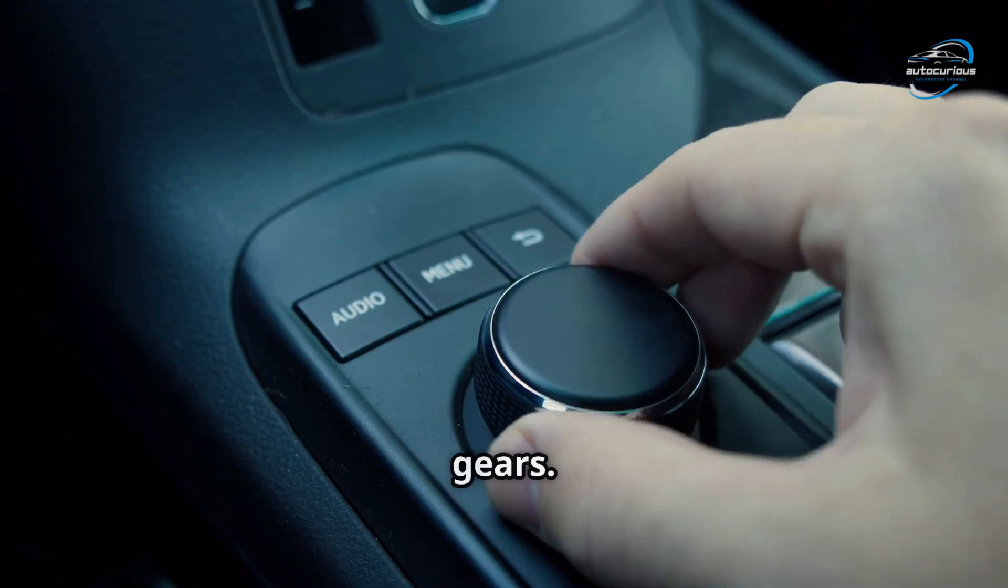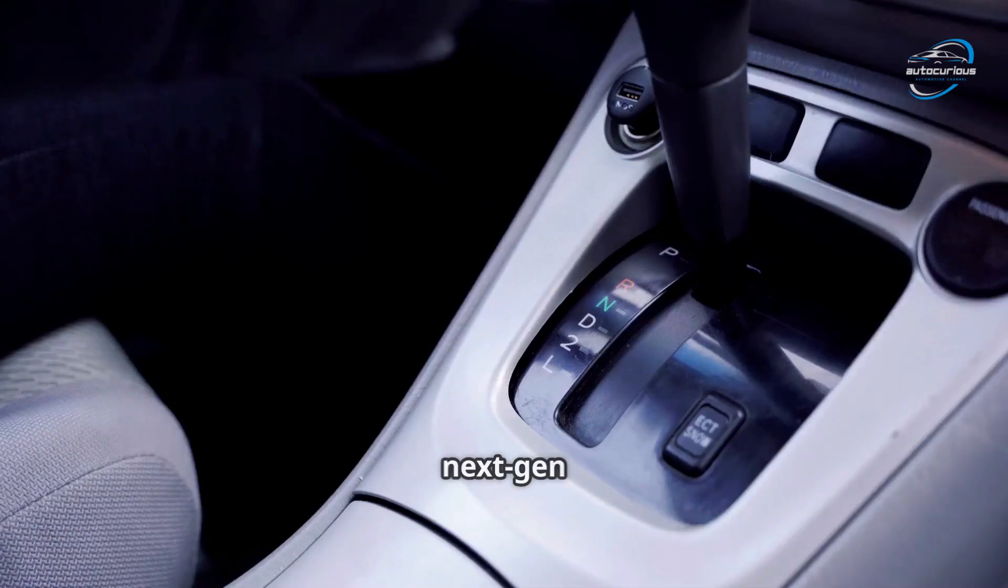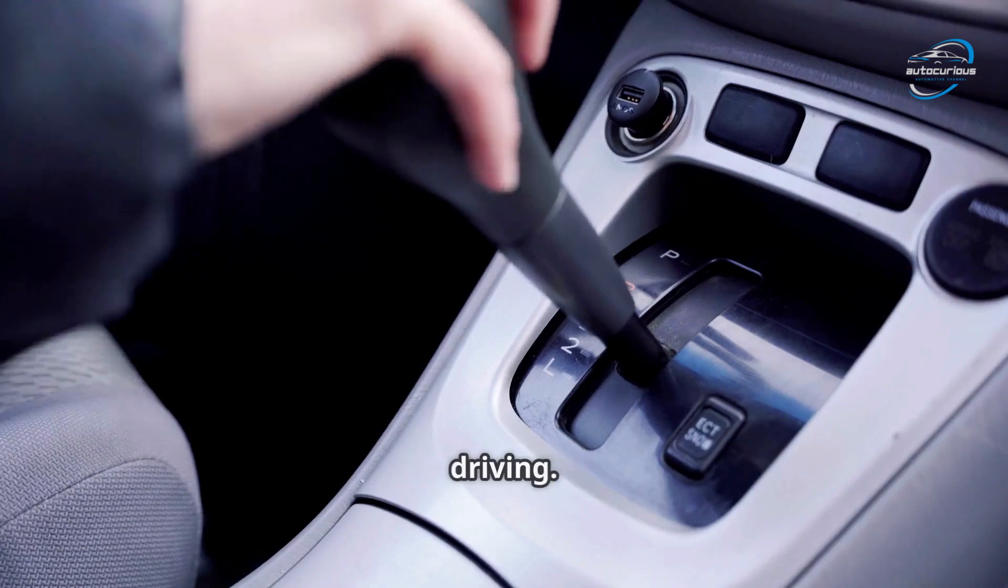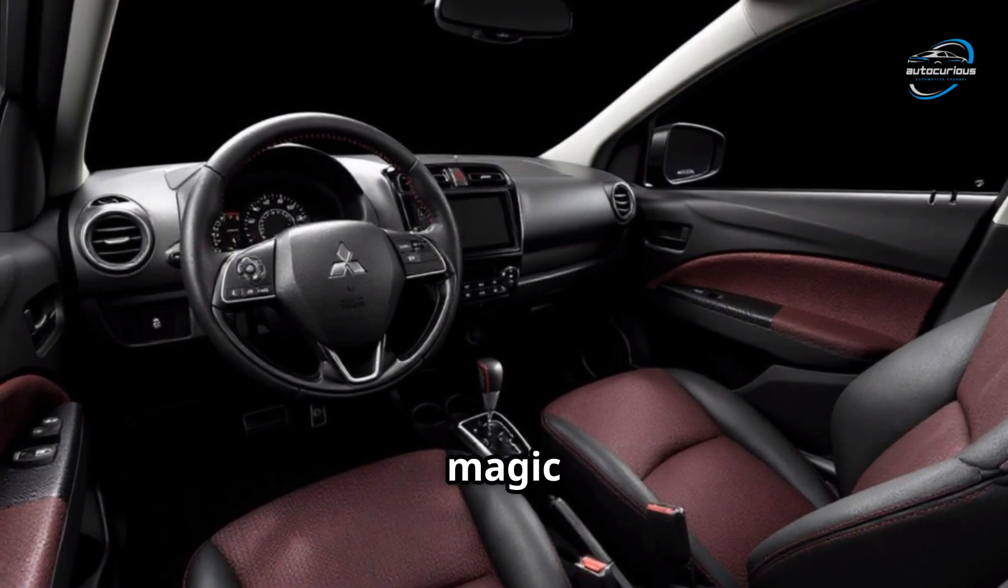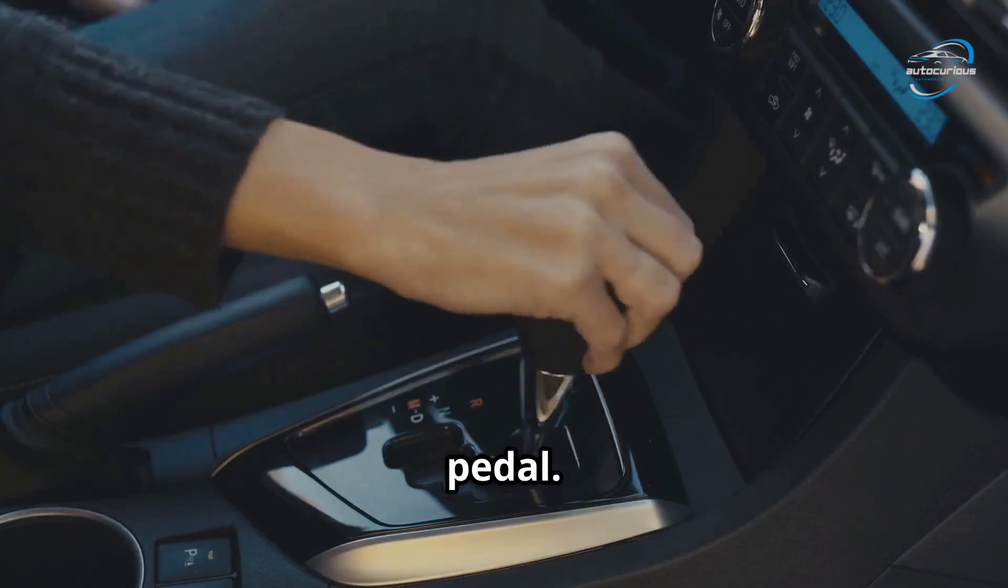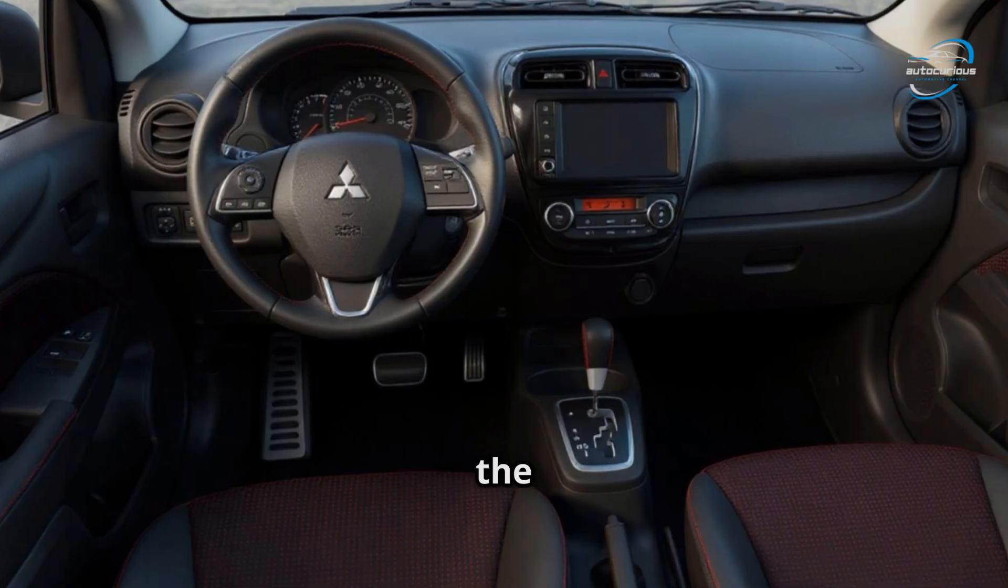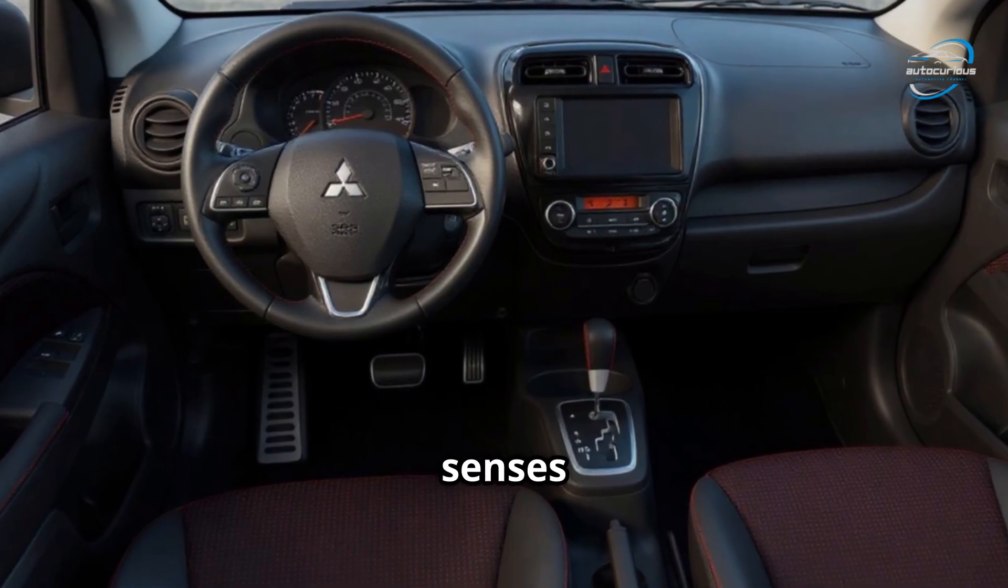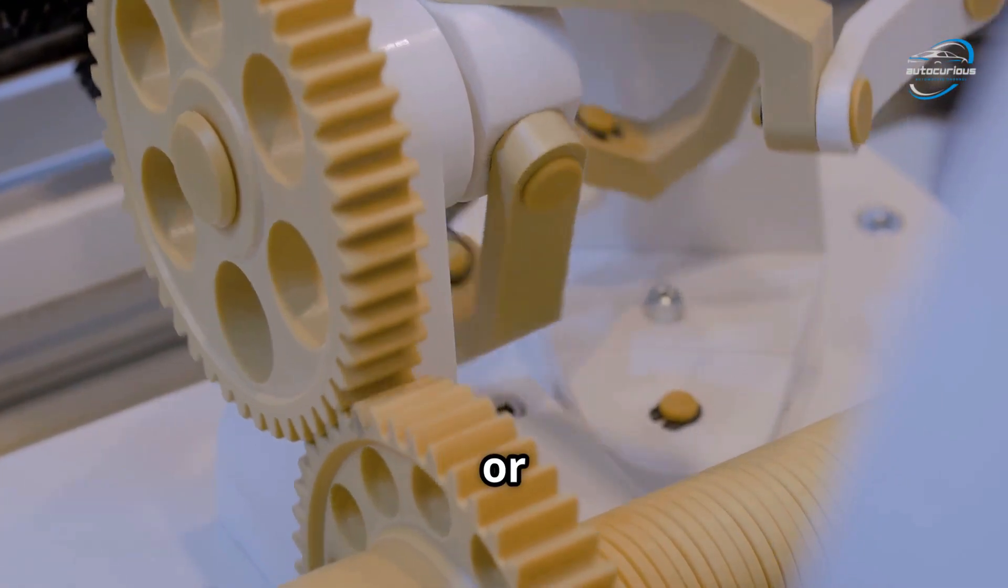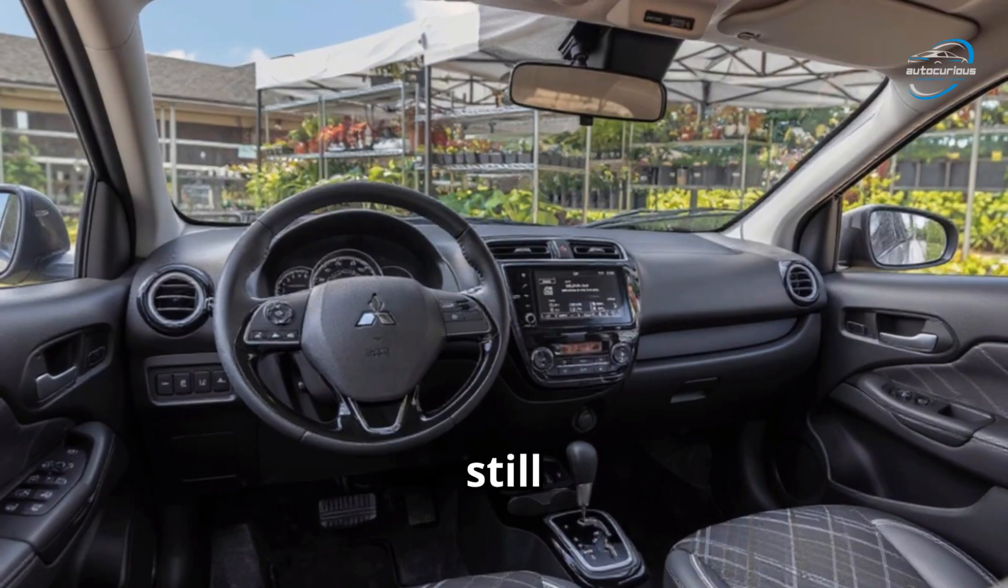Now, let's talk about the IMT, Intelligent Manual Transmission. It is kind of a hybrid between manual and automatic. You get a gear lever like a manual car, but no clutch pedal. The system uses sensors to detect your intent and automatically engages the clutch. Pros are engaging drive without clutch fatigue, great for traffic and hilly areas, and better control than AMT.